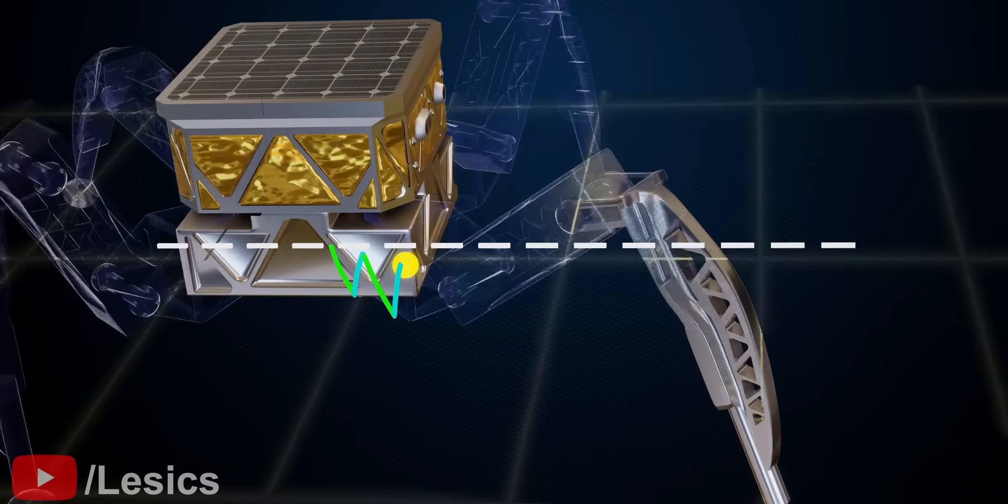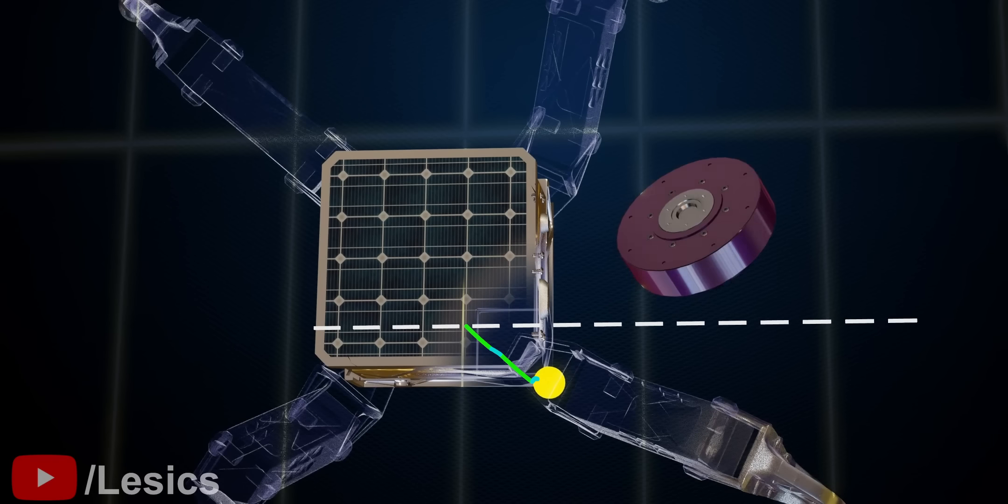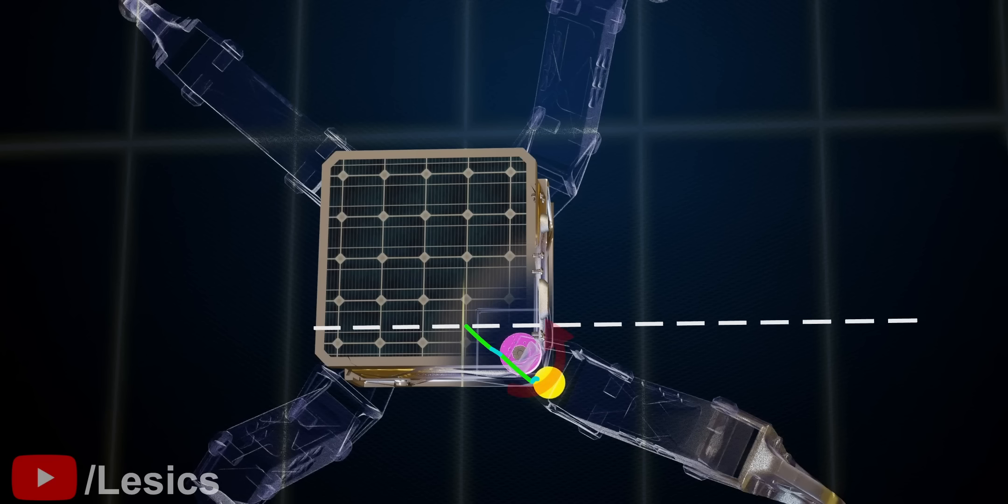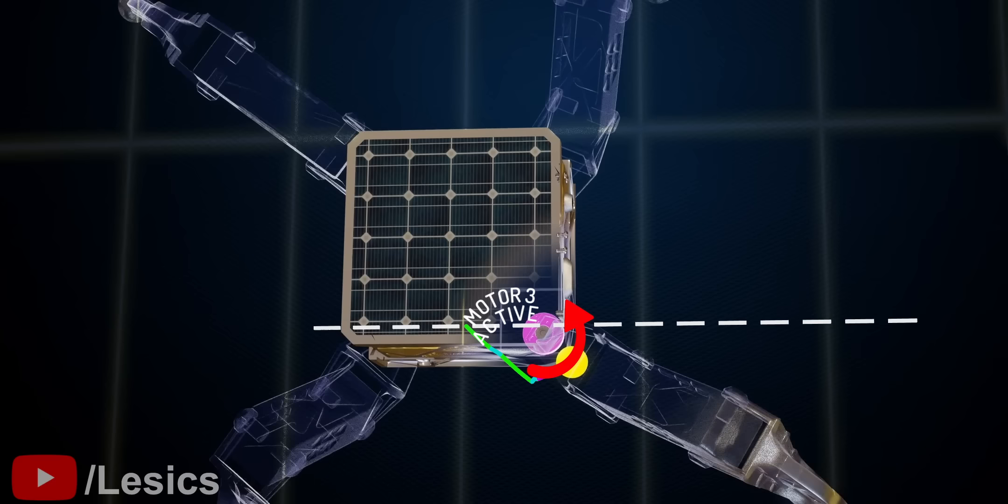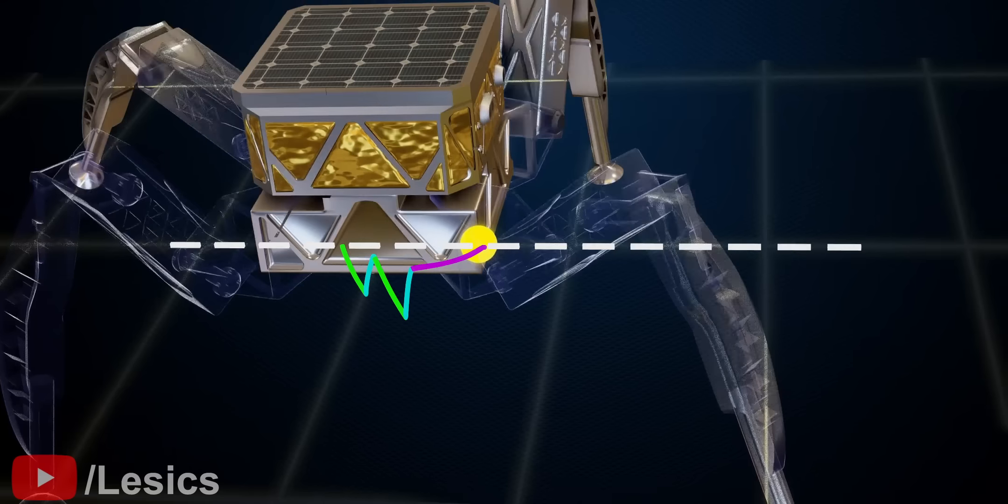However, if you observe carefully, the yellow point has moved at an angle, not straight. To fix this issue, we need to introduce one more motor in the rover. This motor can turn the rover's body or leg in a vertical axis. So the solution is simple. Just activate the third motor after the second motor. The yellow point movement is perfectly straight now.